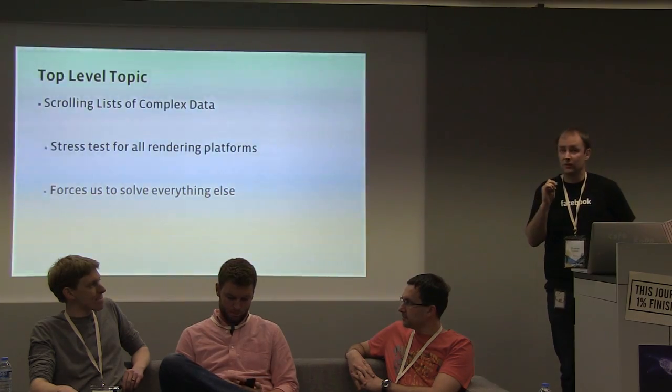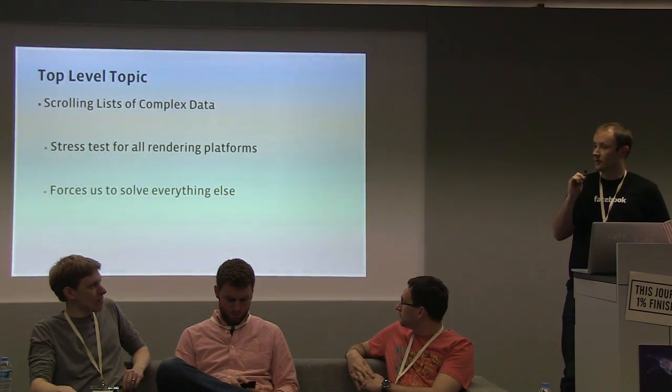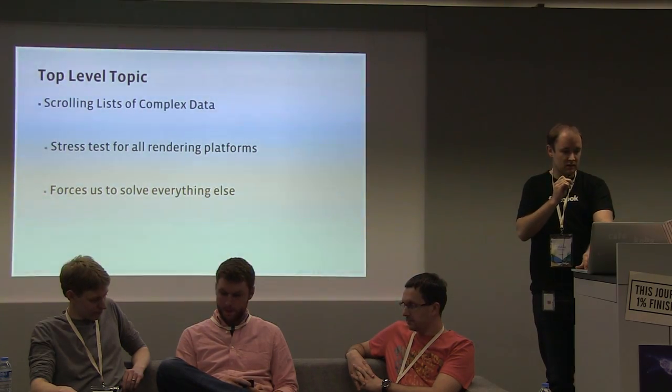I'm Shane O'Sullivan, I work as a UI engineer at Facebook, spent a couple of years on the mobile side and now working on our business interfaces. We're going to talk about some of the potholes on the road to having a performant, fast, non-stuttery website. The two main things I'm going to talk about are scrolling performance of complex content, which is more or less a stress test for all rendering platforms, not just web. People also have a problem with this on iOS and Android. The second topic is memory management, which is quite related.